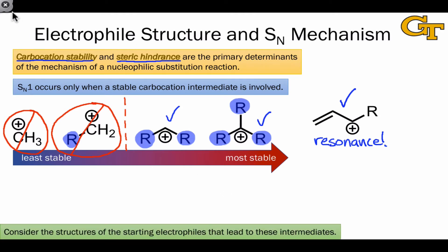One thing to keep in mind is that you do need to consider how departure of the leaving group in the original electrophile can give rise to these intermediates. So, for example, a methyl carbocation is going to come from a methyl halide or pseudohalide. A primary carbocation would come from a primary halide or pseudohalide, and likewise for the secondary and tertiary cases.